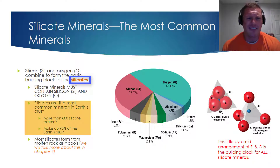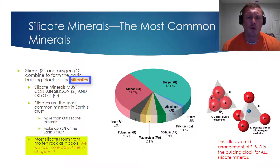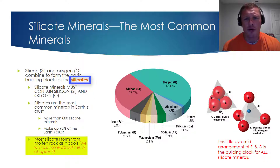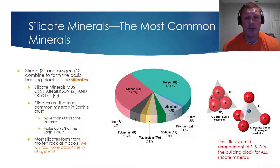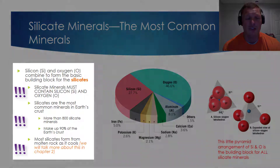Put as concisely as possible, silicate minerals form when molten rock cools. If you're not 100% sure what molten rock is, we'll talk about that more in the next Vodcast series. When we're talking molten rock, we're typically talking things like lava, magma, and igneous rocks.